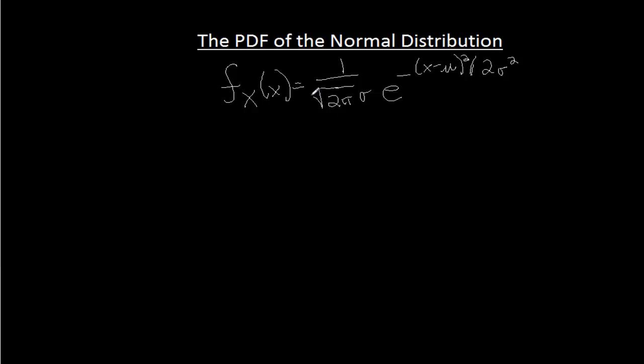and that one over the square root of two pi sigma, that is chosen precisely so that it will be a PDF.